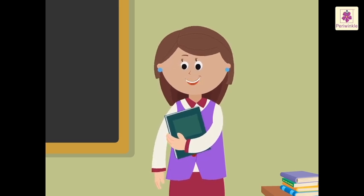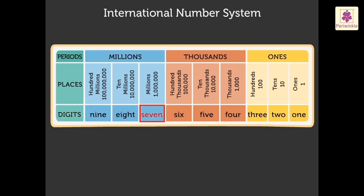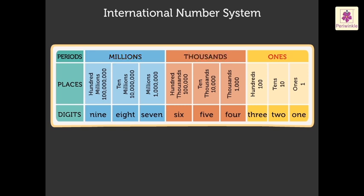Now, let us look at the International number system. Look at this table — it shows the periods, the places, and the digits. Seven digit numbers are placed in the ones, the thousands, and the millions periods. The ones period comprises ones, tens, and hundreds. The thousands period comprises thousands, ten thousands, and hundred thousands.